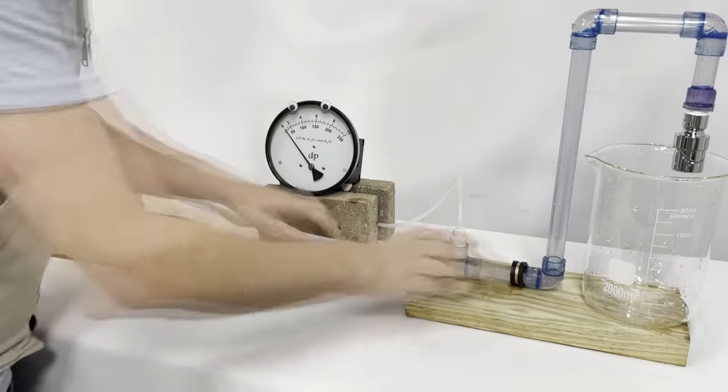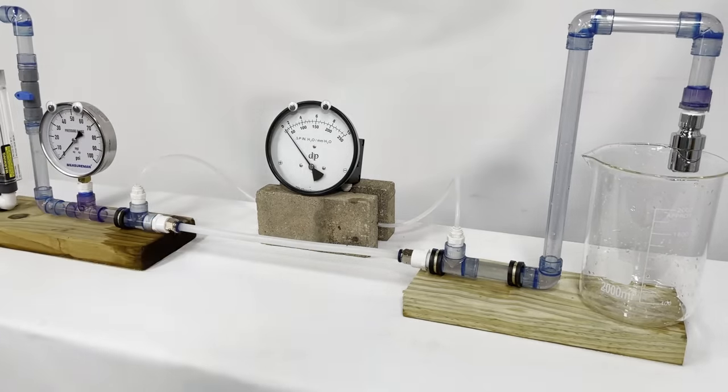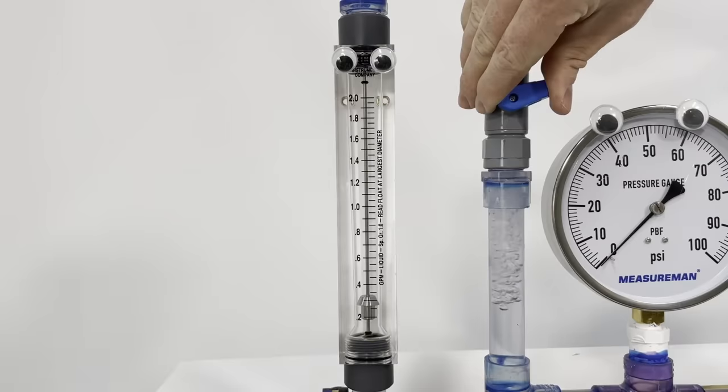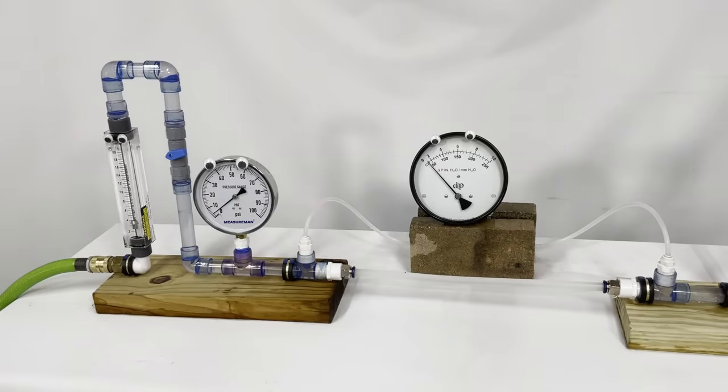First, we'll investigate the effect the length of the pipe has on head loss. I'm starting with a short piece of pipe in the manifold, and I'm testing everything at three flow rates: 0.3, 0.6, and 0.9 gallons per minute, or GPM. At 0.3 GPM, we see the pressure drop across the pipe is practically negligible, just under half an inch. At 0.6 GPM, the head loss is about an inch, and at 0.9 GPM, the head loss is just over 3 inches.